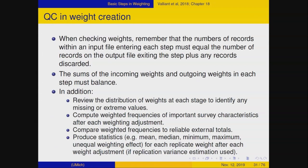Compute the base weights and check that they add up to the right things. Do the non-response adjustment and check the sum of those weights — the sum coming into a step needs to equal the sum going out, once you account for all parts of the file: the eligible, the ineligible, and non-respondents. You also need to review the distribution of weights at every stage to make sure you haven't inadvertently created some that stick out like a sore thumb.